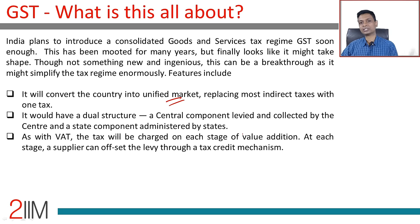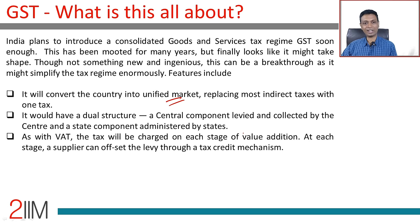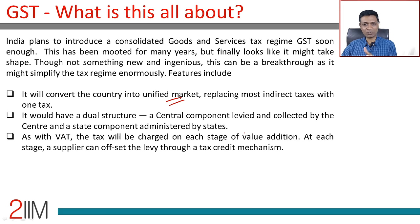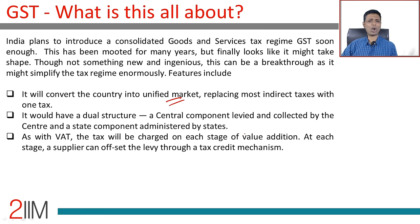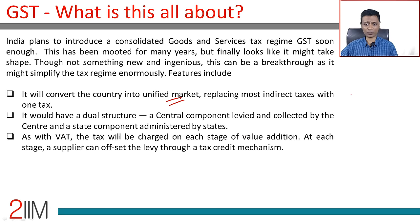Currently we have central tax, sales tax, VAT, octroi — all kinds of frameworks. Whenever goods travel from one state to another, or when a good is brought in after processing within a state, all of these complicate the tax structure. Very frequently, the tax offset is not available.